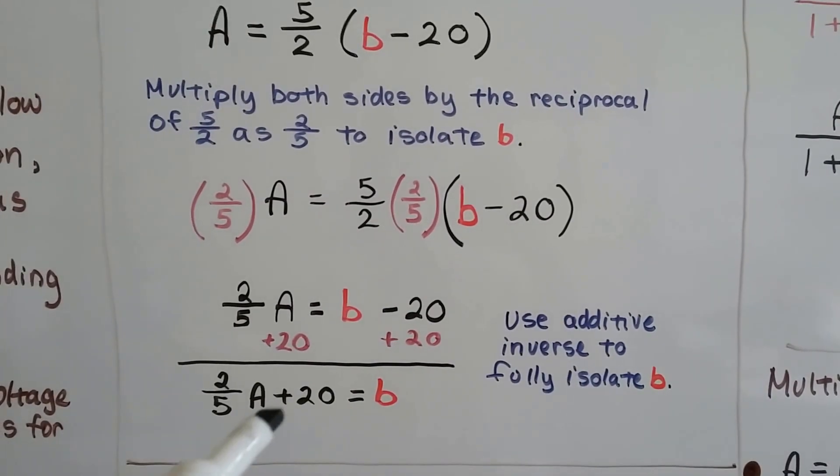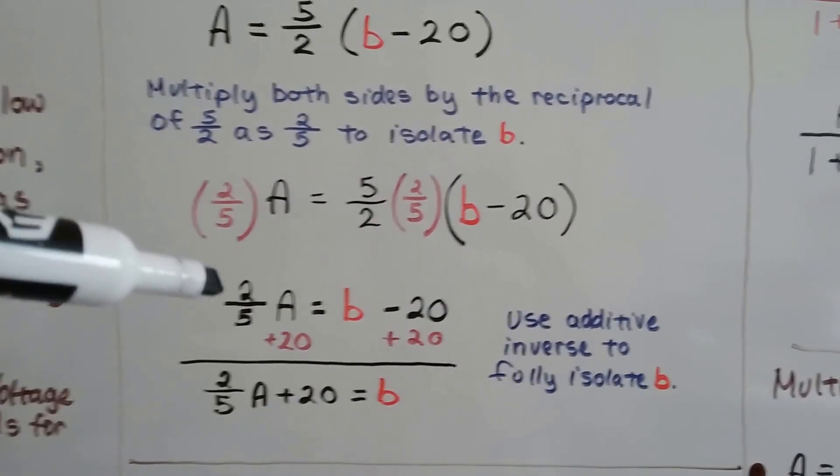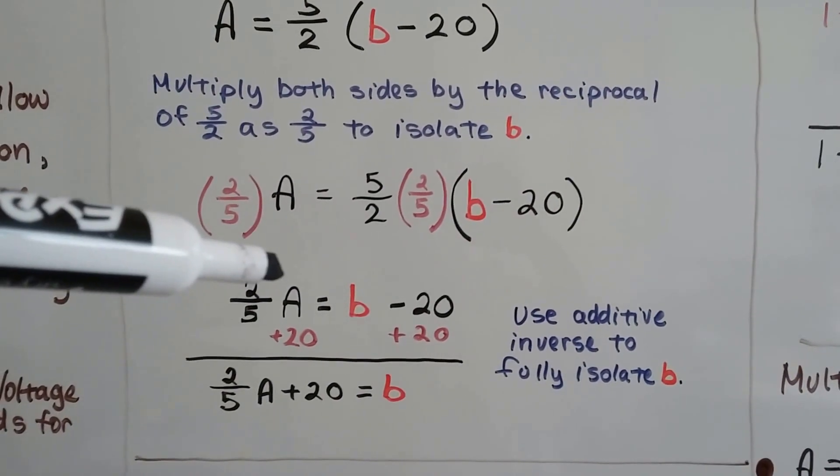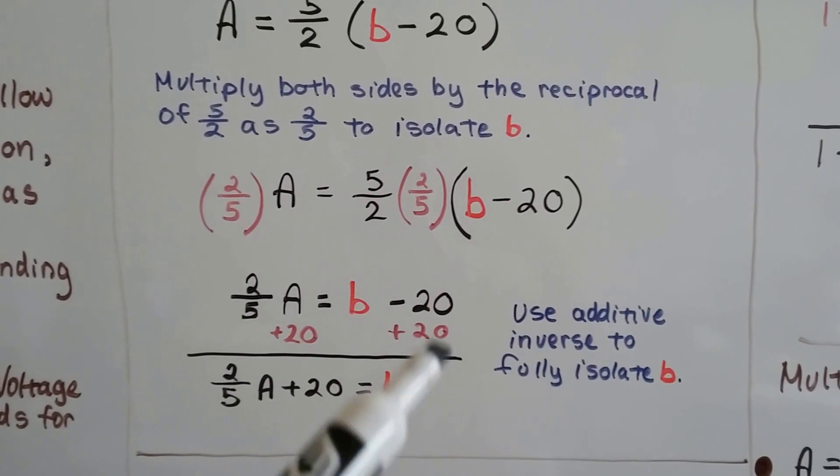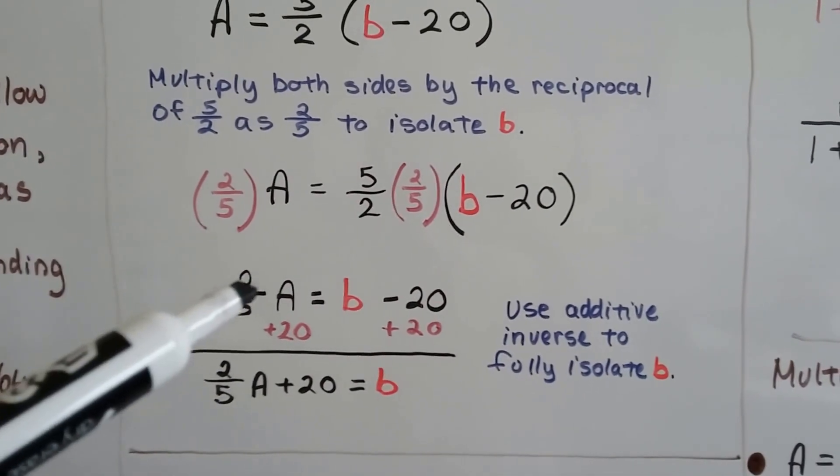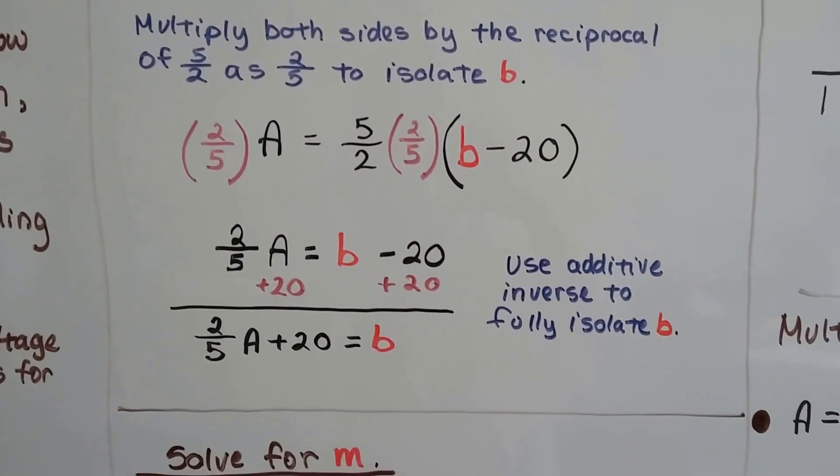Now we have 2 fifths A plus 20. Now remember, this 2 fifths is the coefficient of A, so we're not going to add the 20 to the 2 fifths. This 20 is off by itself. This 2 fifths has become the coefficient of A.